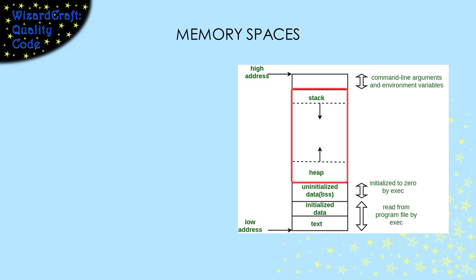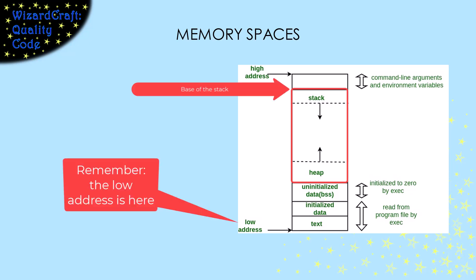C does that so your program can have either a big stack or lots of dynamically allocated memory. Now that picture says that the stack grows down. The base is at the high end of memory and the stack pointer is getting smaller as we add more stack frames.